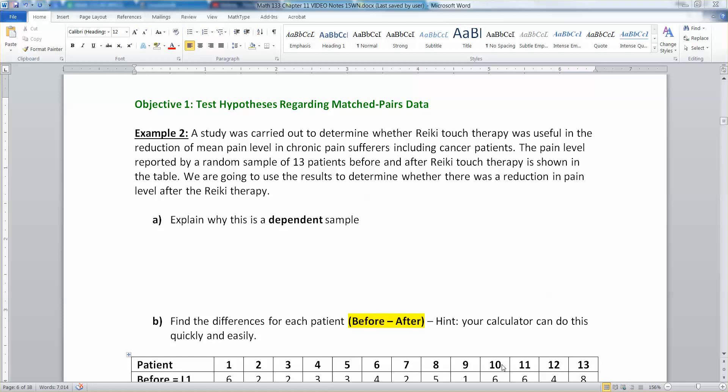So let's read this. A study was carried out to determine whether Reiki touch therapy was useful in the reduction of mean pain level in chronic pain sufferers, including cancer patients. The pain level reported by a random sample of 13 patients before and after Reiki touch therapy is shown in the table. We are going to use the results to determine whether there was a reduction in pain level after the Reiki therapy.